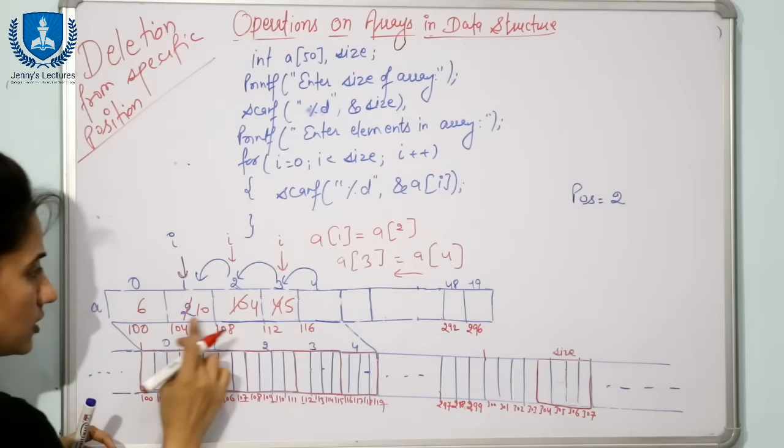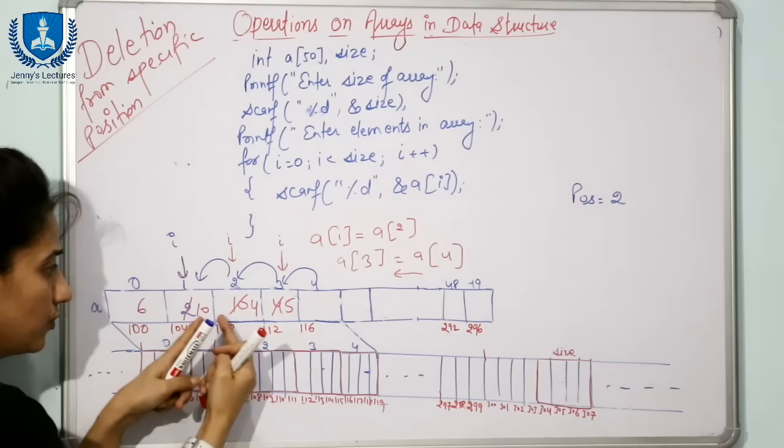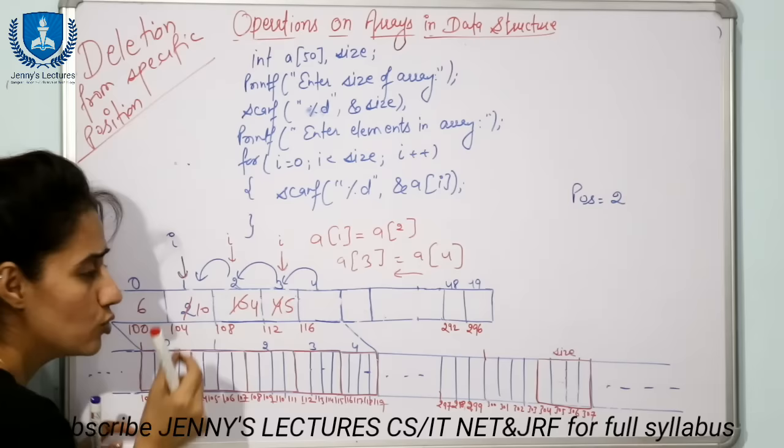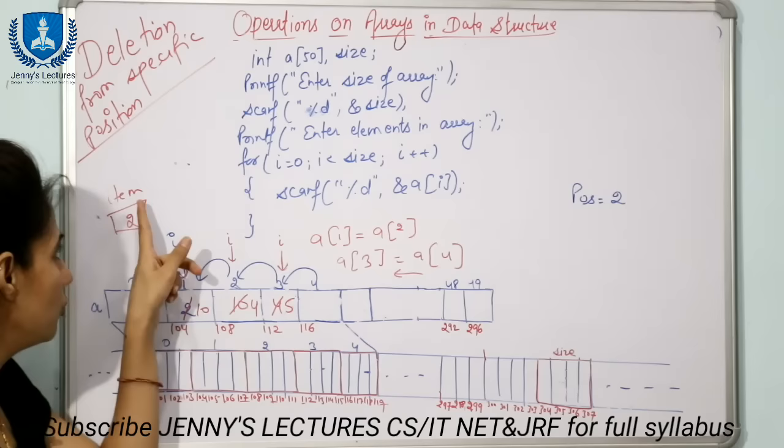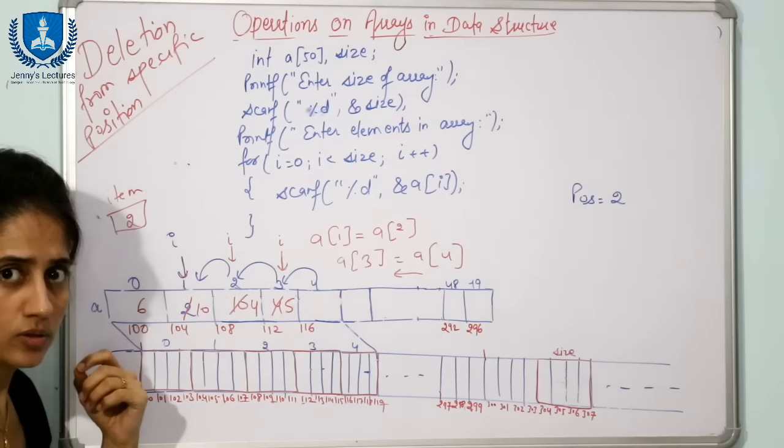If you want to print which data was deleted, before shifting you can take a variable called 'item' and store the value from that position — item = a[position-1], which stores 2. After deletion, you can print it. If you simply want to delete without printing, no need to store the value — just start the for loop and begin shifting from position minus 1.